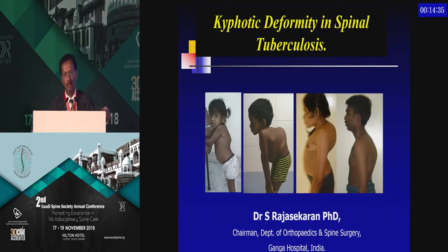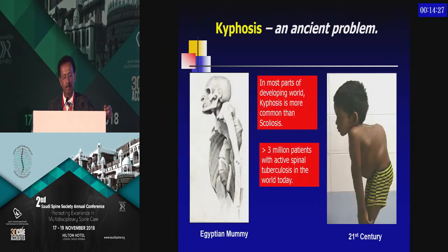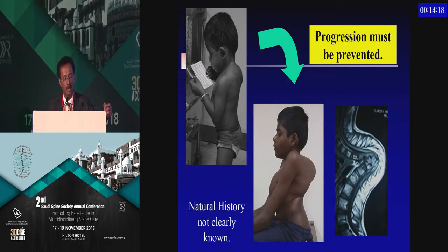When we talk of neglected spinal conditions, I think severe kyphotic deformities of spinal tuberculosis is a perfect example. Although it's an ancient problem, there are more than 3 million patients with active spinal tuberculosis in the world today, and unfortunately, what starts off like this frequently ends up like this, and it's a big disaster.